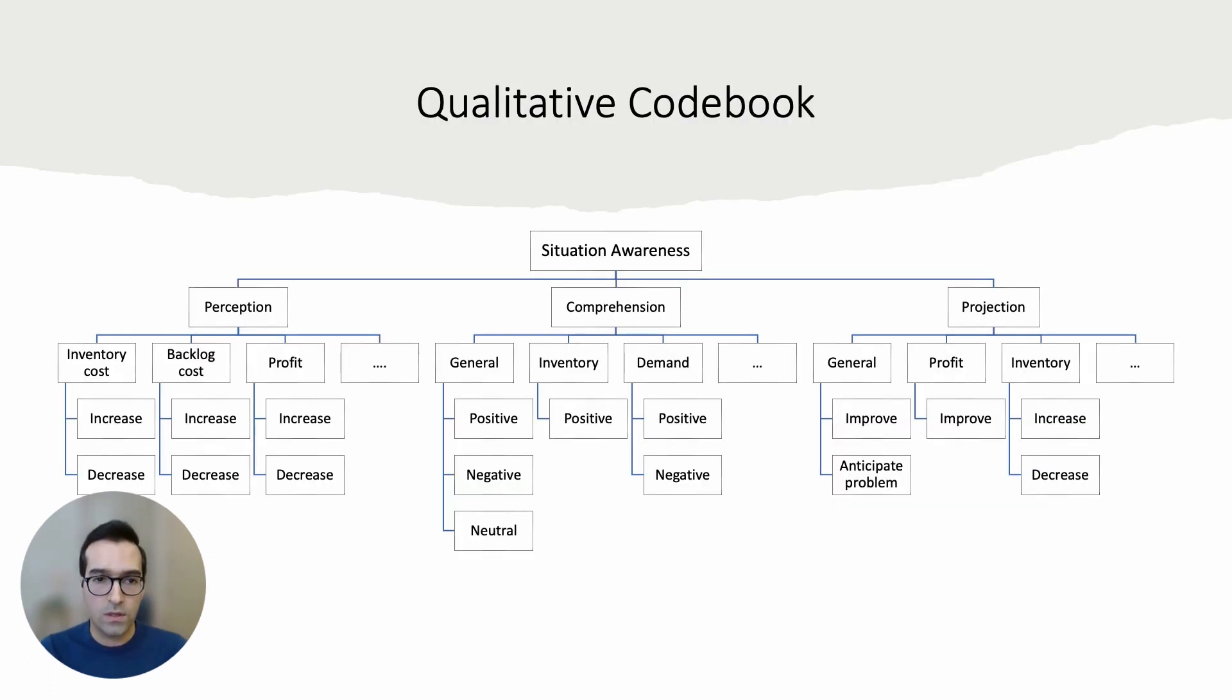Using situation awareness theory, we obtained this codebook that captures the aspects of players' mental models. What we did was basically look at what aspect of supply chain players are describing in their responses. For example, if they are talking about inventory, demand, orders, or backlog costs. Then we also look at how it is described by players using either a verb or adjective. For example, if they are talking about an increase or decrease in their costs or if their response reflects positive or negative framing about what they perceive the environment to be. We also looked at how their responses are related to these aspects of perception, comprehension, and projection.